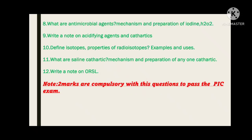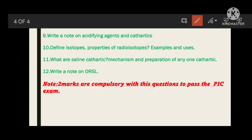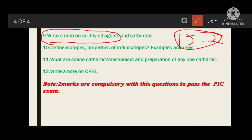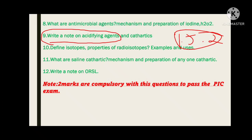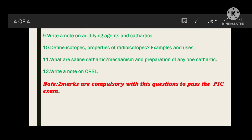Next: antimicrobial agents — mechanism and preparation of iodine and hydrogen peroxide. Write the mechanism for antimicrobial agents, then write about strong iodine, aqueous iodine, or weak iodine — any one — and hydrogen peroxide is compulsory. Then write a note on acidifying agents and cathartics. Acidifying agents act in the gastrointestinal tract — the best example is dilute HCl. In our stomach, concentrated HCl is released at a pH of 1.5 to 2, which is very strongly acidic. Cathartics are medicinal devices used to treat constipation.